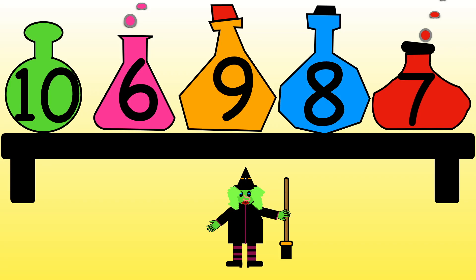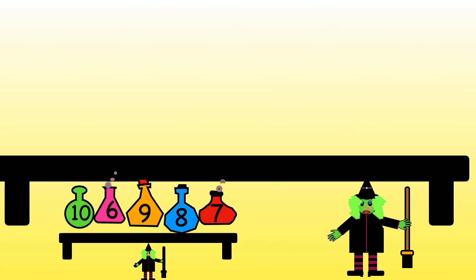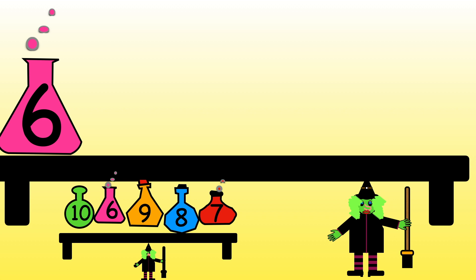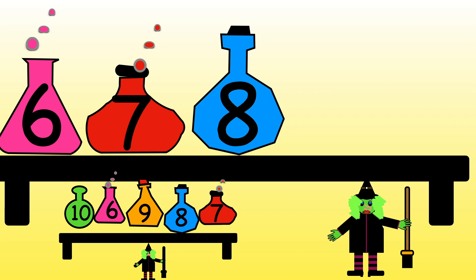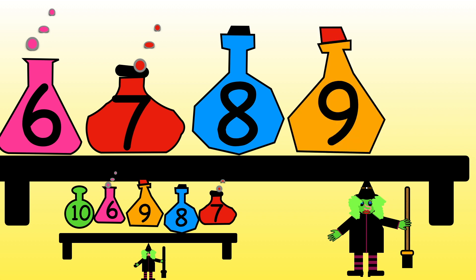The witch has muddled up her potions: ten, six, nine, eight, seven. Can you put them back in the right order, from the smallest number to the largest number? Which colour potion should go first? Which one is next? Which one is after that? Which one comes next? And which one is last?